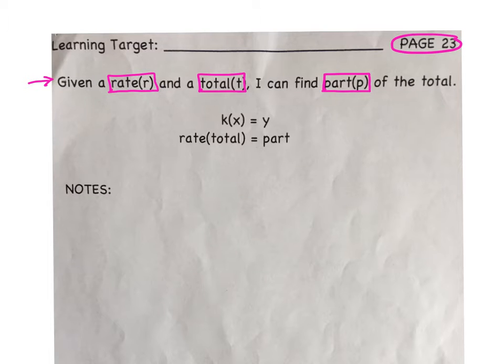Remember, percents are proportional. So the foundation for our equation is k times x equals y. But we use a specialized version of that formula: rate times total equals part.